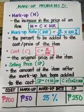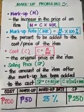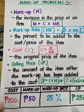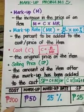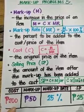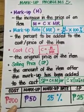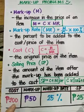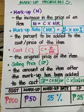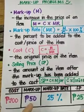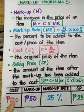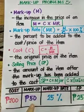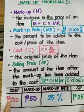You bought a t-shirt for 200 pesos each from the wholesaler. You plan to have a gain of 50 pesos — that will be your markup, which you add on top of your original price. So 50 pesos is 25% of 200.